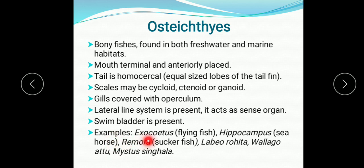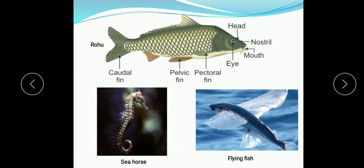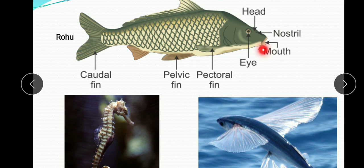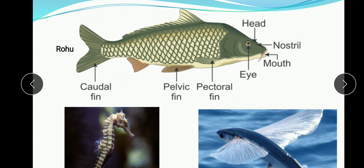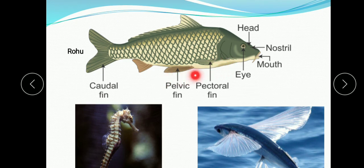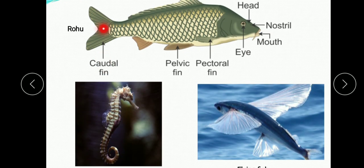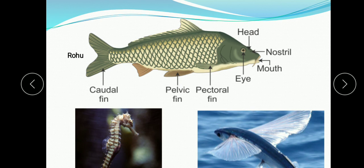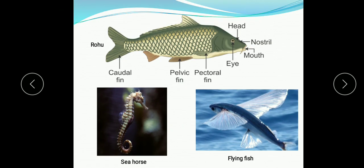Examples of Osteichthyes are Exocoetus (flying fish), Hippocampus (seahorse), Remora (sucker fish), Labeo rohita (rohu), and Catla. In Labeo rohita you can see the mouth is terminal and anteriorly placed, and the operculum is visible — the covering of the gills. Fins include pelvic fins, pectoral fins, dorsal fin, and caudal fin (tail fin), which shows the homocercal condition — both lobes of the tail fin are equal. Another example is seahorse and flying fish.